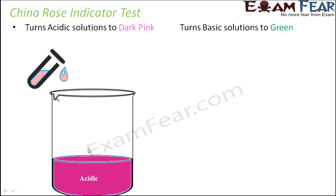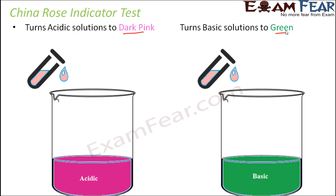What happens is, acidic solutions turn dark pink in color, whereas basic solutions turn green in color. So you take the acidic or the basic solution in a beaker, put a few drops of the China Rose indicator solution, the reddish solution, and the change in color is very different. With acid it is dark pink, and with bases it is green. Looking at the difference in colors, you can easily identify which one is acid and which one is base.